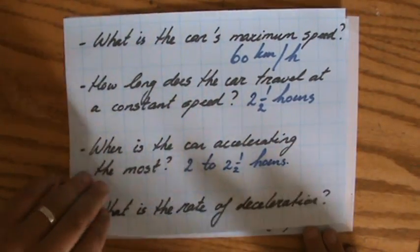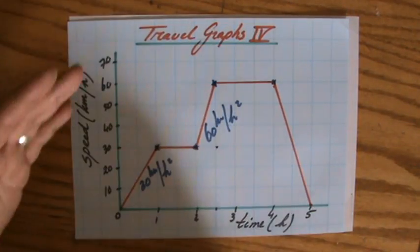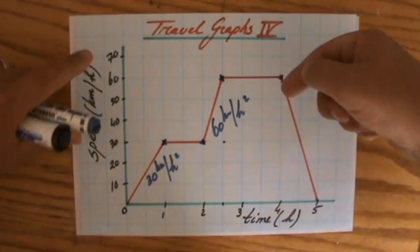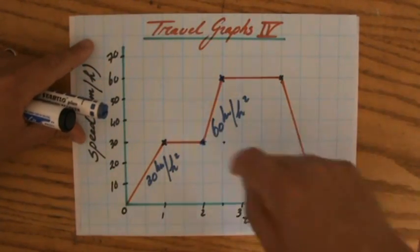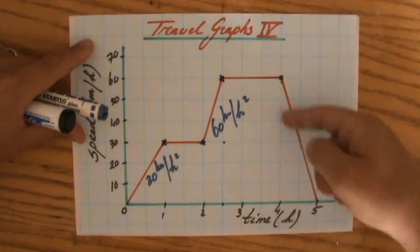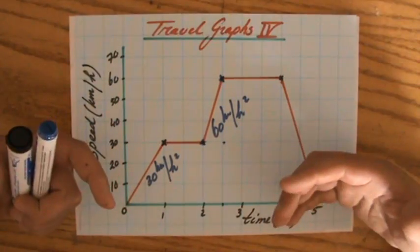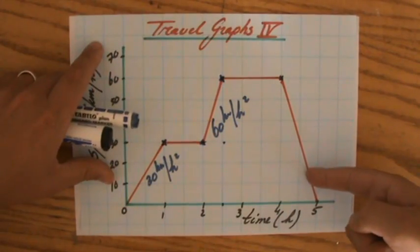What is the rate of deceleration? Well, again, for a distance-time graph, this means you turn around, you go back home. But for a speed-time graph, this means I am decelerating. My speed is becoming less, I am probably braking.